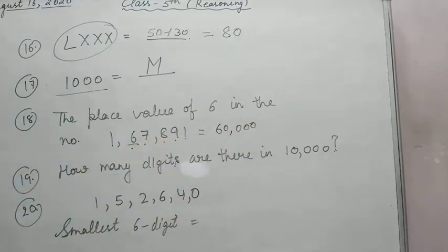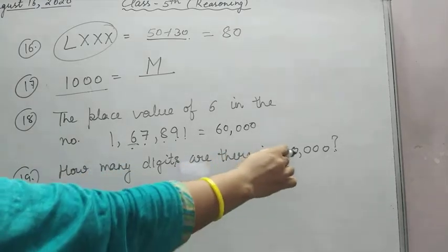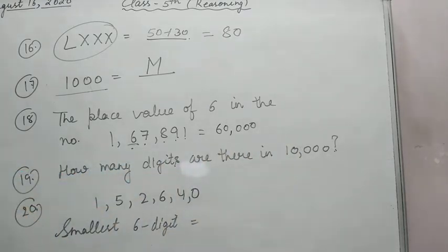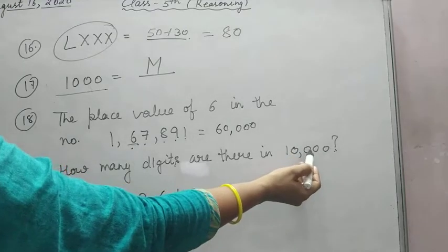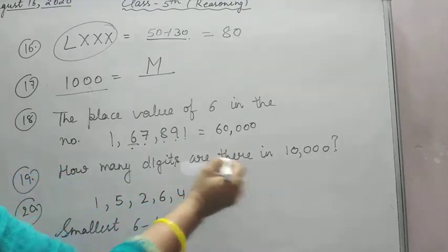Question 19: How many digits are there in 10,000? Count this - very easy. One, two, three, four, five. Five digits are there.